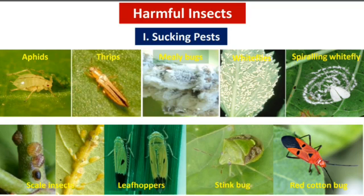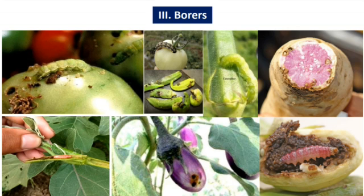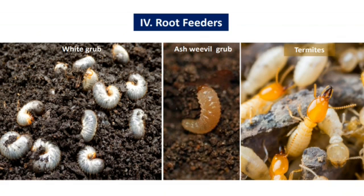These are some of the harmful insects, known as sucking pests: aphids, thrips, mealybugs, spiraling whitefly, scale insects, leafhoppers, stink bug, and red cotton bug. There are also defoliators which damage the leaves, borers which cause holes in the fruits of many vegetable crops, and root feeder insects.